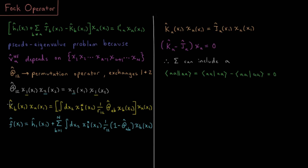Looking at our exchange operator for spin orbital B acting on an electron in spin orbital A, that is going to equal the integral over all coordinates of electron two of chi-star-B, one over R12, and the permutation operator P_AB acting on chi-B for electron two, then acting on spin orbital A for electron one. The permutation operator exchanges A and B: where we see spin orbital B it becomes A, and where we see spin orbital A it becomes B.